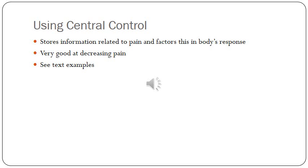Using central control is another way to decrease pain, dealing with the subjective experience of pain. The pain experience happens at the brain, so past experiences and emotional influences affect our pain perception — the brain stores all this information from past experiences, influencing how injuries are experienced down the road. Central control can actually be used to decrease pain as well, which will be discussed later.